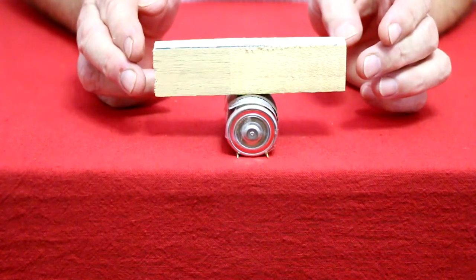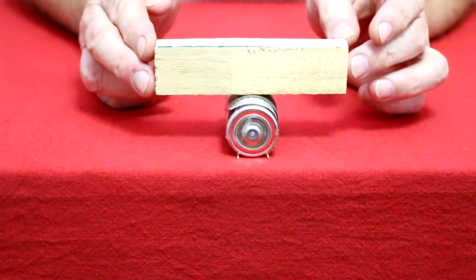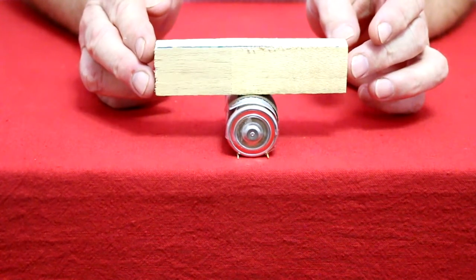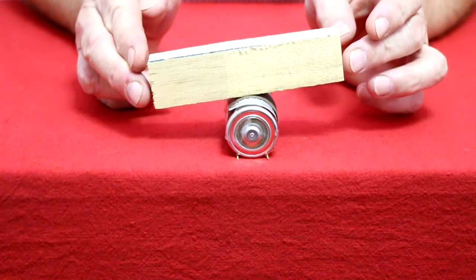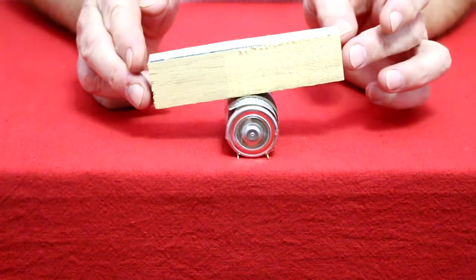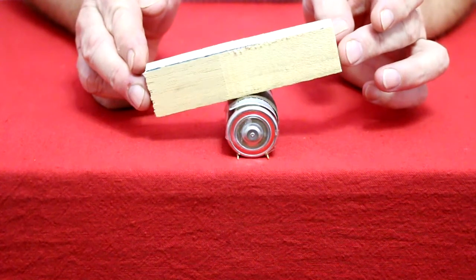There is a third kind of equilibrium which is different from stable and unstable equilibrium, and is called neutral equilibrium. There is no preferred position for the piece of wood, so you can move it to any angle and it will stay there.